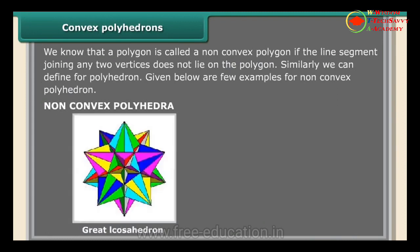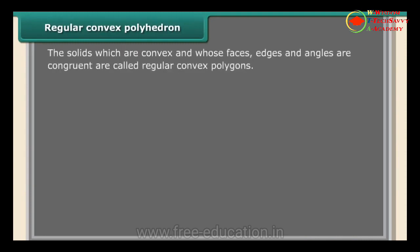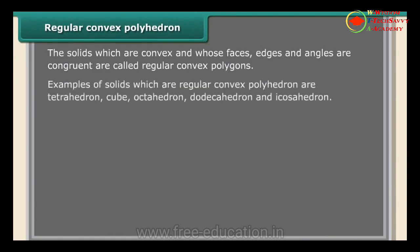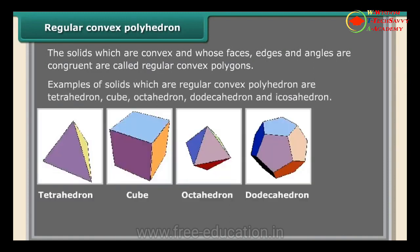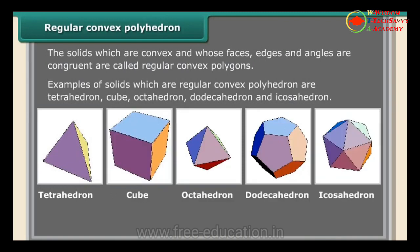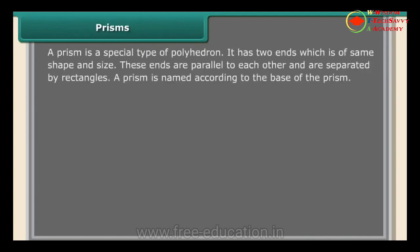Regular convex polyhedra: solids which are convex and whose faces, edges, and angles are all congruent are called regular convex polyhedra. Examples include the tetrahedron, cube, octahedron, dodecahedron, and icosahedron. A regular octahedron has eight equilateral triangles as faces.